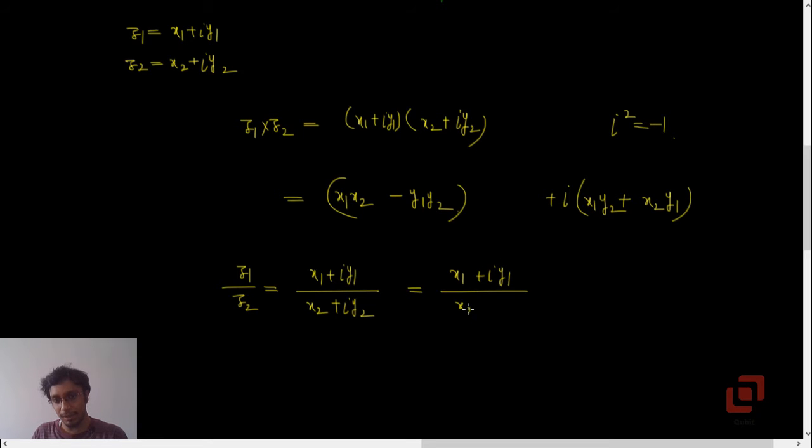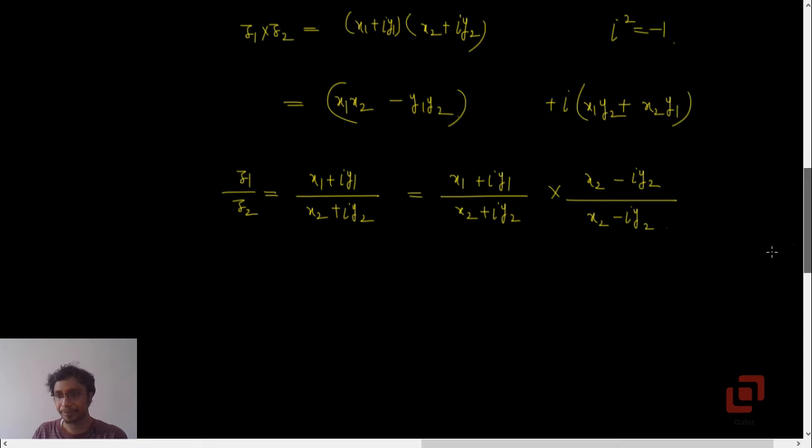We multiply and divide by the complex conjugate of the given complex number which is present in the denominator, so x2 minus i y2 upon x2 minus i y2. Now the numerator can be very easily obtained by following the rules of multiplication which we studied just now.